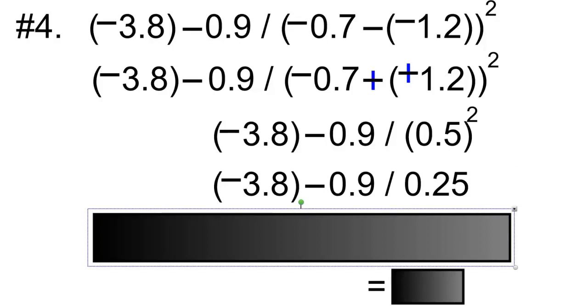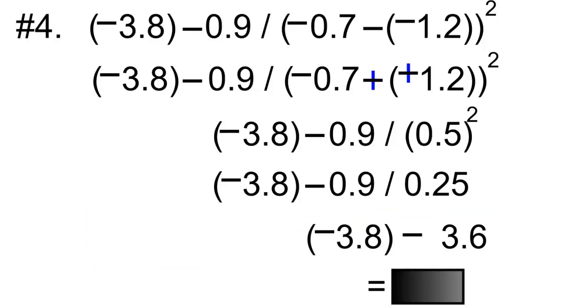Step number three is division and multiplication from left to right, and we have division. So we'll use 0.9 divided by 0.25, which is 3.6.